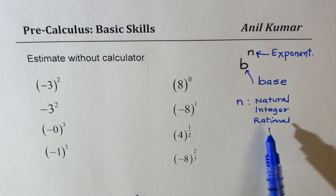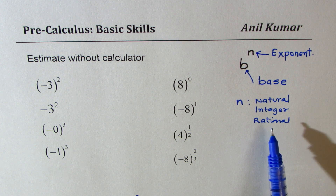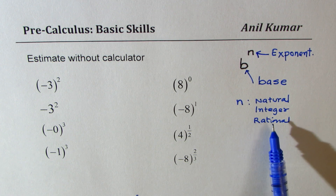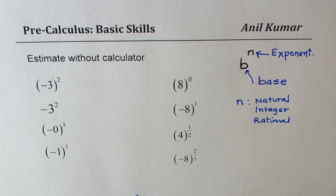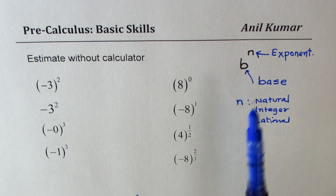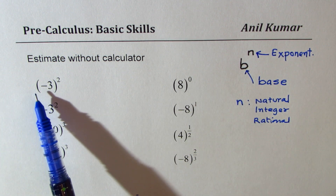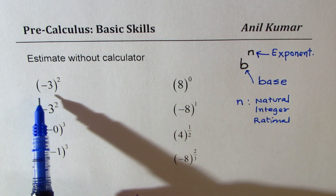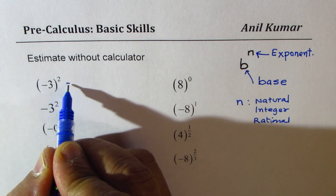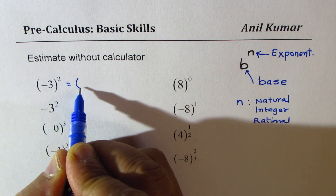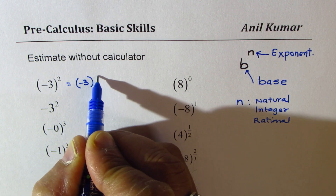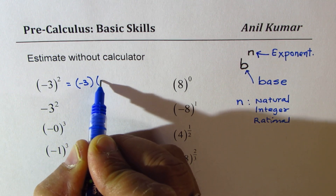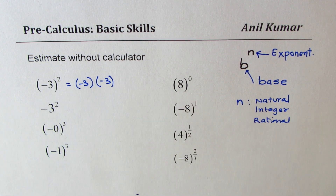We'll estimate without using a calculator. Now, when I say minus 3 square, it really means what? Minus 3 square means we are going to multiply minus 3 by itself twice.